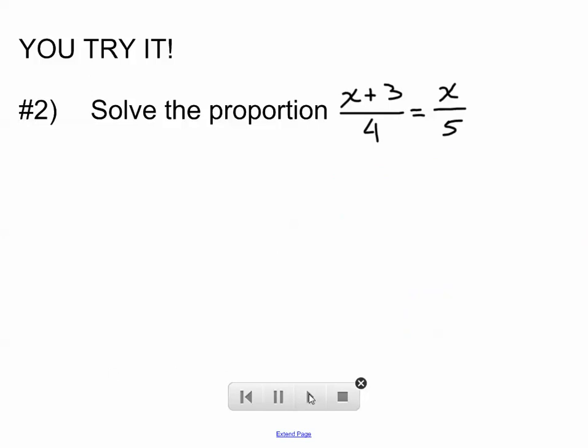Give this one a shot. Remember to press pause, and when you press play, my solution will be here waiting. All right, so cross products. X plus 3 times 5 should equal 4 times X. We distribute on the left, 5X plus 15. Let's subtract 5X from both sides. That will give us 15 equals negative X, and then our solution would be negative 15.